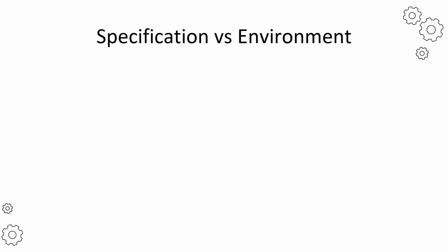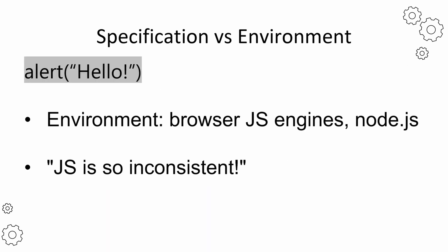Let's take a look at the alert statement here. If you know a bit of JavaScript, you've definitely seen this function before. But it's actually not in the JavaScript specification. It's provided by the environment, such as the JavaScript engine of the browser, or Node.js. Some say JavaScript is not consistent. It could be the result of the fact that some functions behave differently in different environments.